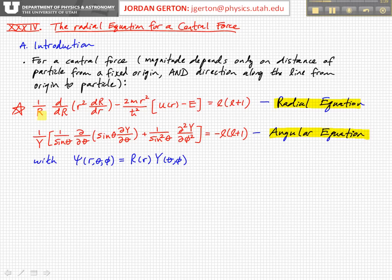R is a function of little r, the distance from the origin. We have this complicated-looking differential equation equal to a constant. Remember, L is a quantum number that characterizes the total angular momentum. The total wave function psi of r, theta, and phi in polar coordinates equals the product of the radial part and the angular part of the wave function.